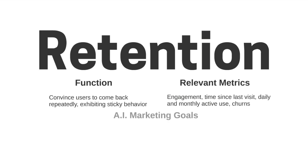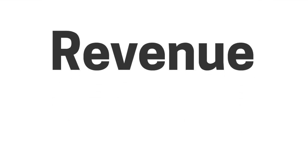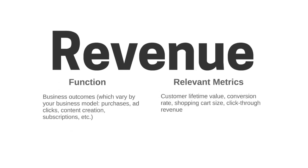How AI can help at the retention stage is by predicting churn, customer care chatbots, sentiment analysis, visual social listening, and personalization. Then we move to the next stage: Revenue. The function here is business outcomes, which vary by your business model — like purchase, ad clicks, content creation, subscription, etc.